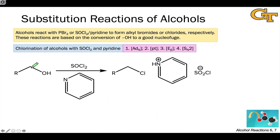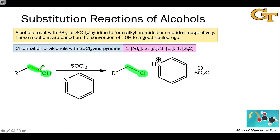Treatment of an alcohol with SOCl2 and pyridine results in the substitution of the alcohol hydroxyl group for a chlorine — the chlorine analog of the PBr3 reaction with analogous synthetic utility. The idea is that we can turn an alcohol into a good electrophile with a leaving group that doesn't require acid, operating under neutral or basic reaction conditions. The mechanism here is a little bit different, however.